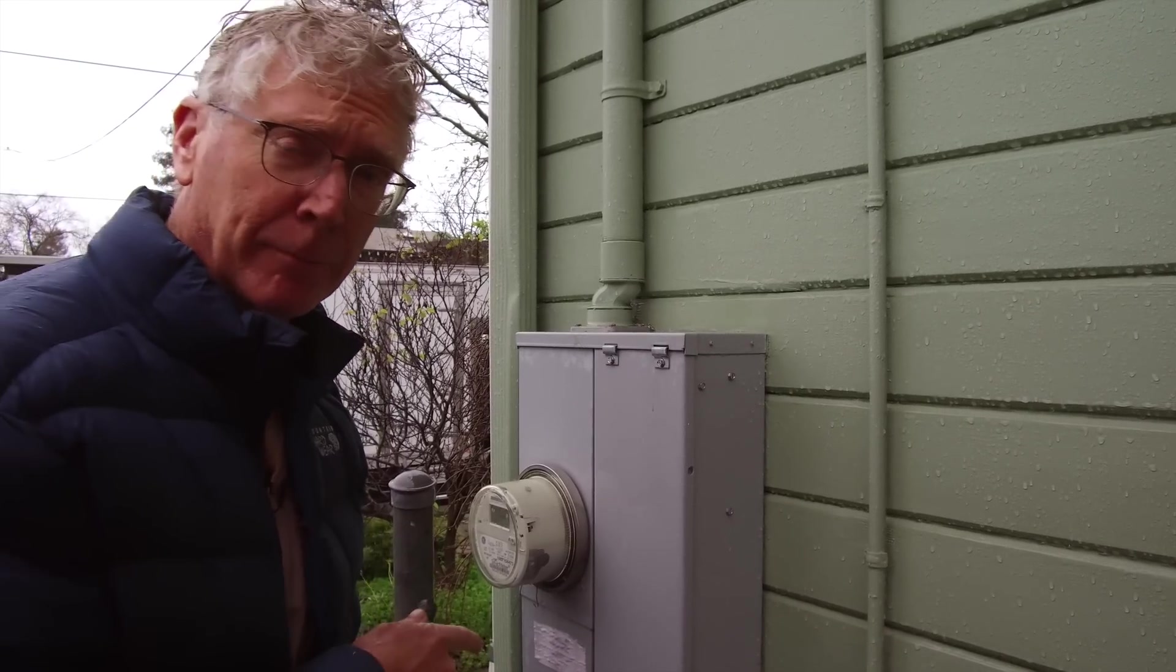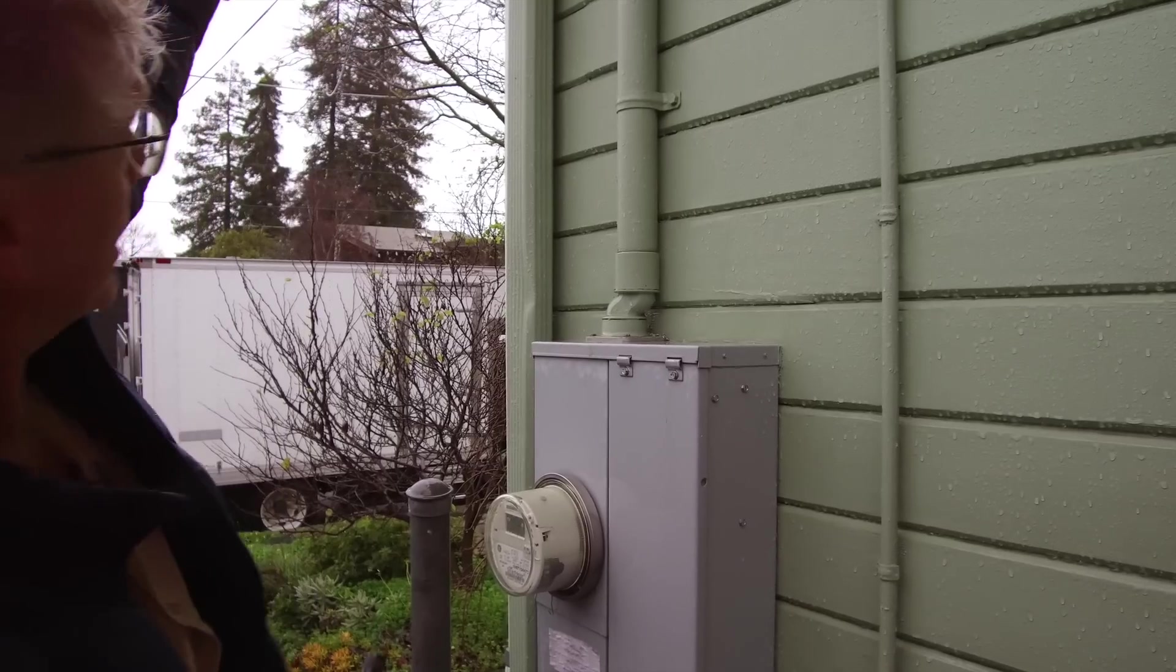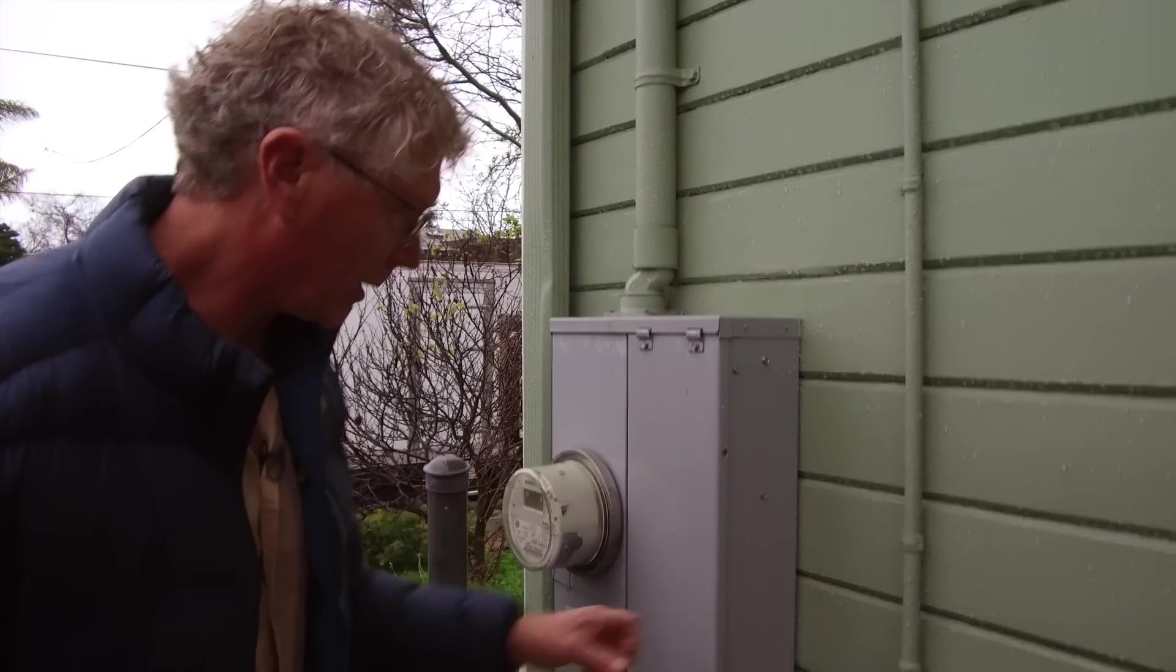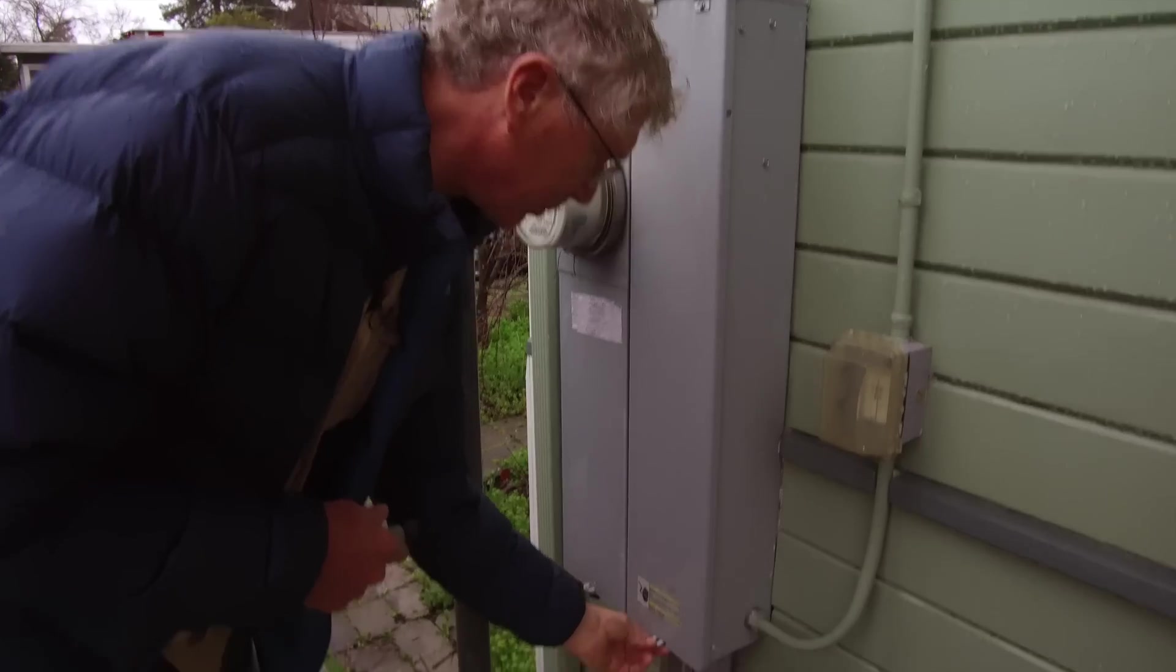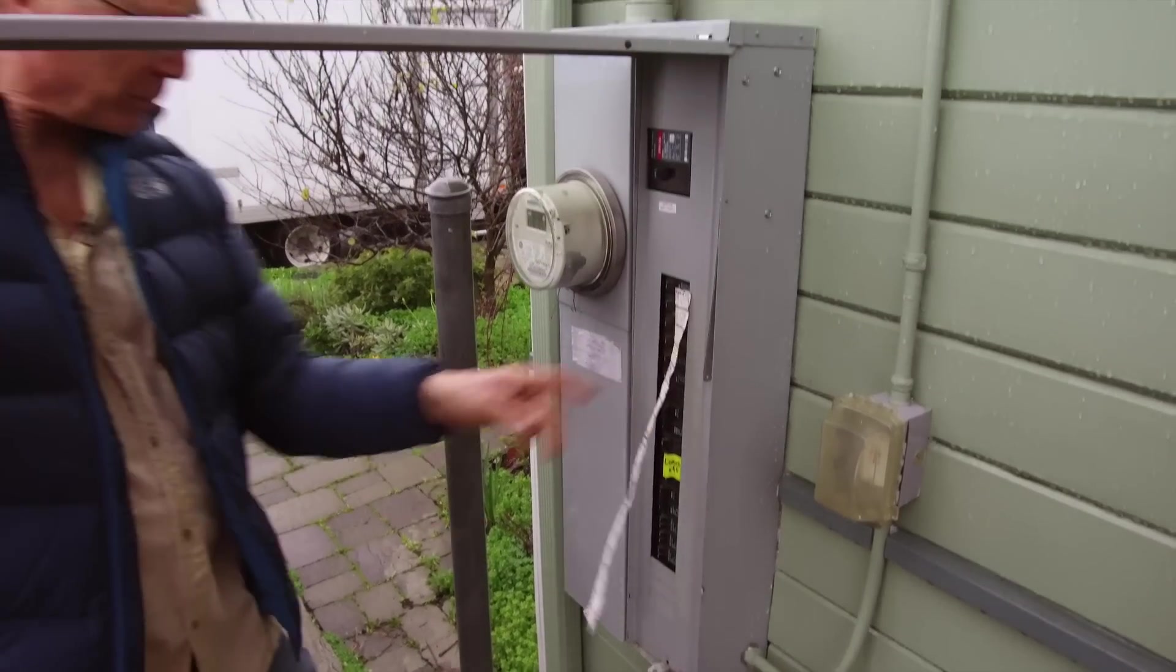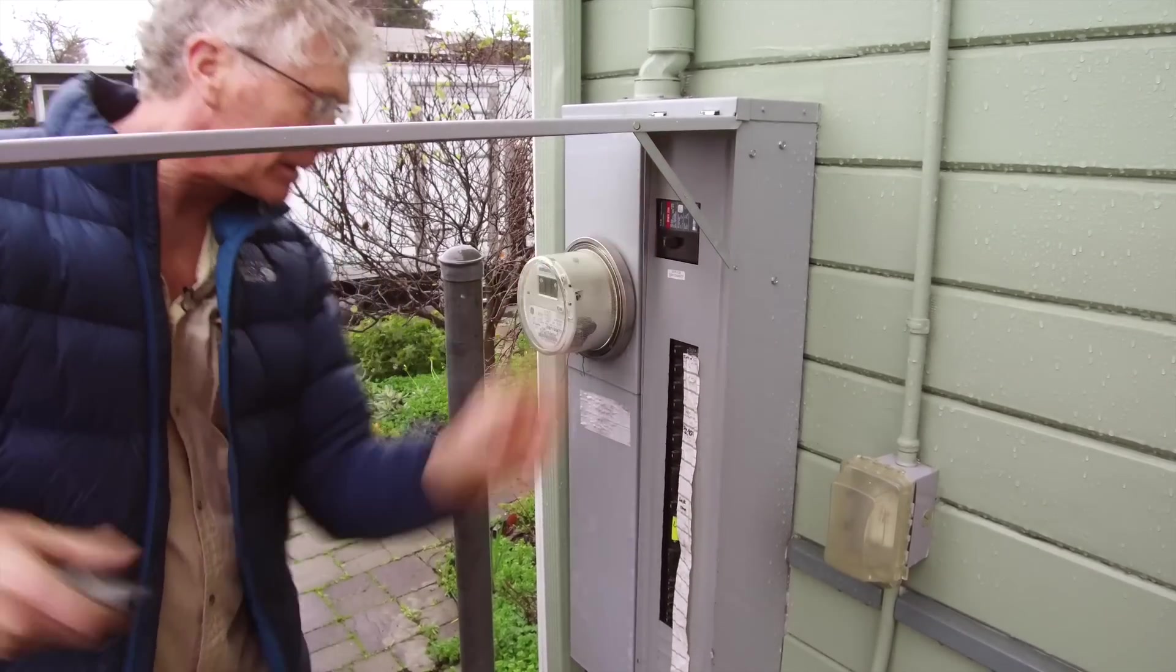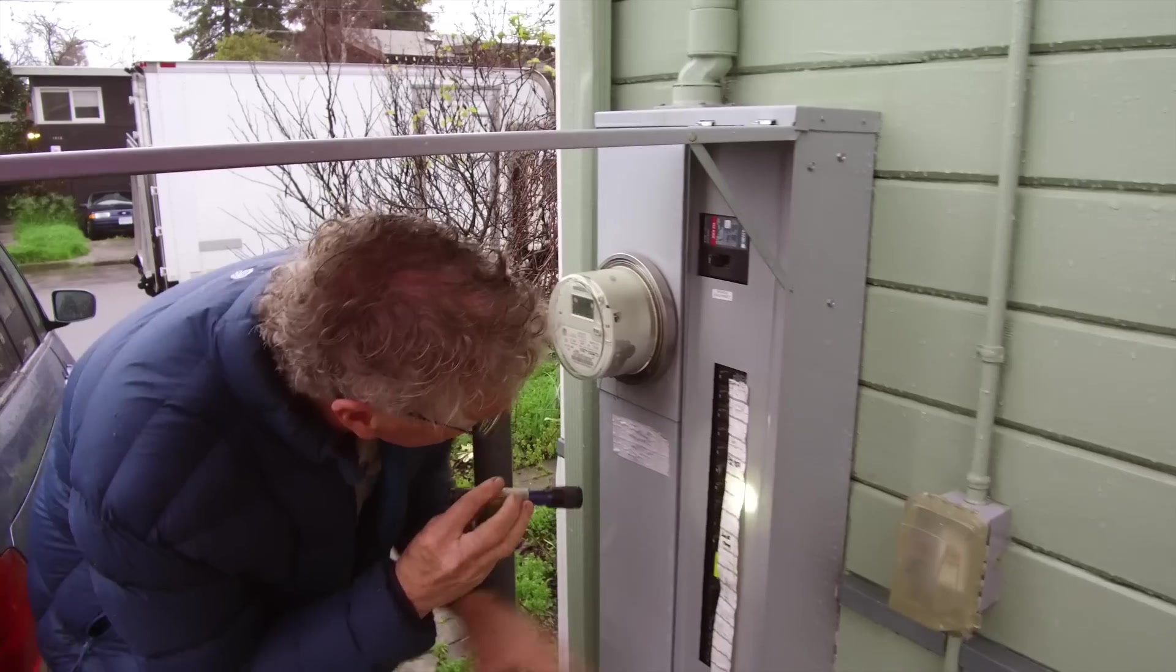So, here's a very typical suburban outside main panel. Power comes in here from up above, goes through the meter, and runs to the breakers in here. I'm going to open up this panel. This is a very typical panel.